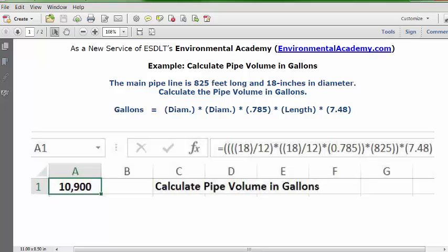You can open up a blank spreadsheet. Put your cursor in C1, put in description: calculate pipe volume in gallons. Put your cursor in A1, format it as numbers with zero decimals, set it as bold and centered. Then you can go to the formula bar and type in this formula.